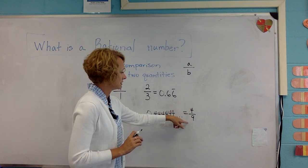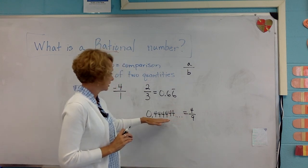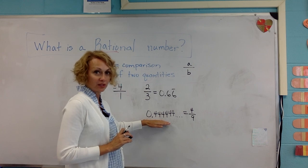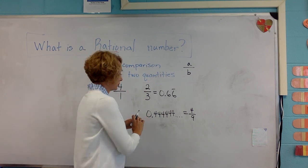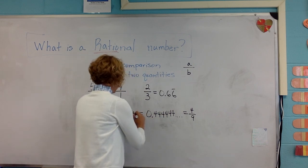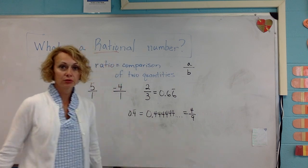You take that digit that repeats and you write it over nine. So four ninths is the fraction equivalent of the decimal point four that's repeating. So point four repeating is a rational number.